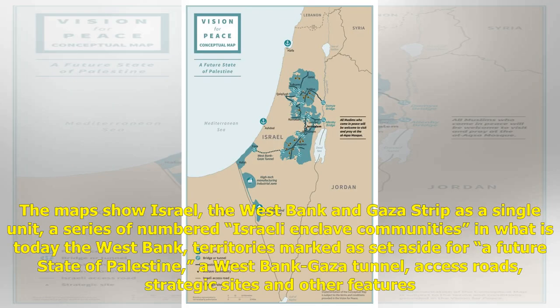The maps show Israel, the West Bank and Gaza Strip as a single unit, a series of numbered Israeli enclave communities in what is today the West Bank, territories marked as set aside for a future state of Palestine, a West Bank-Gaza tunnel, access roads, strategic sites and other features.